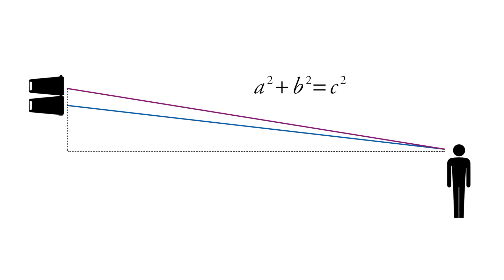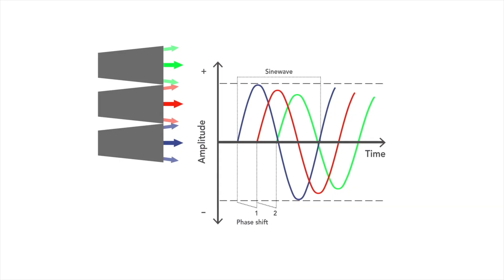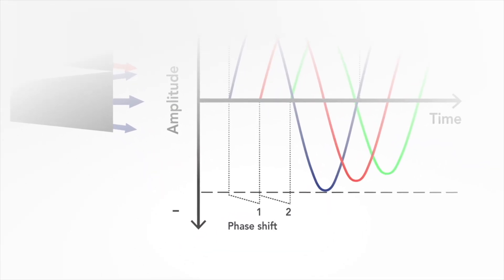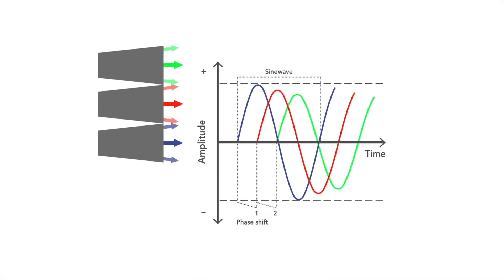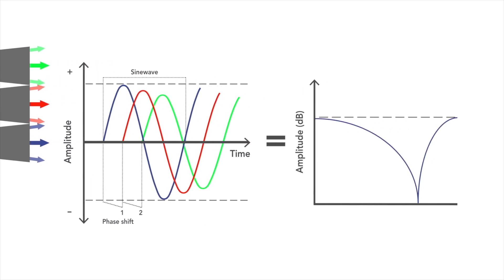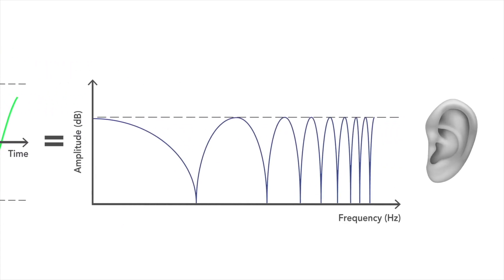When the sound pressure emitted by two line array elements reaches our ear, the sound waves have traveled slightly different paths in length. Due to this curvature of the wavefronts, they overlap with difference in time alignment. Phase shifts arise in these areas. The addition of wavefronts with different phase shifts leads to a diffuse sound image and to loudness differences in the frequency response — dips. The comb filter effect.